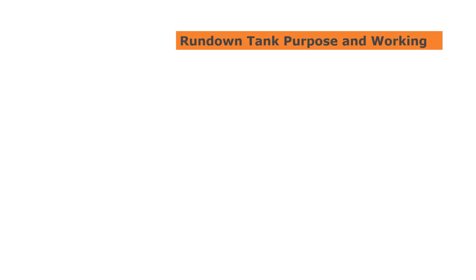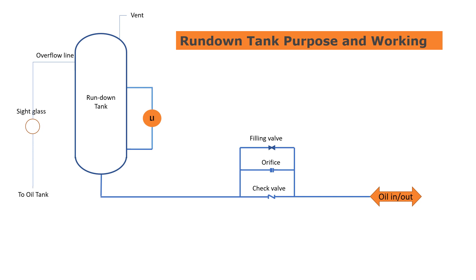Today I would like to introduce the run-down tank, its purpose and working. Run-down tanks are simply used for storage of fluid or oil up to a certain height in a skid system from the shaft centerline of the rotary equipment. Run-down tank is primarily used for the storage of liquid or oil.